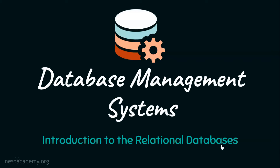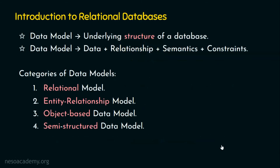In chapter 1 of this lecture series, we have seen a lot of data models. What is a data model? It is the underlying structure of a database, and it is a conceptual tool for describing the data, the relationship among the data, the data semantics and the data constraints. If you are directly watching this lecture, I request you to navigate to the first chapter of this playlist and please do watch the lecture titled Data Models.